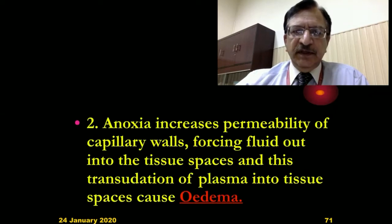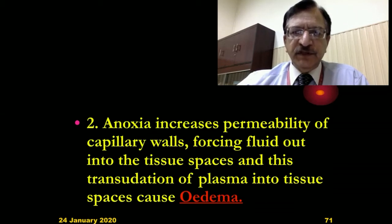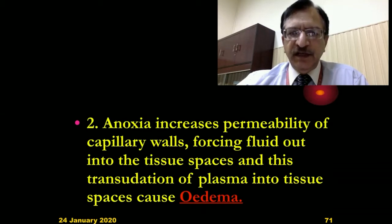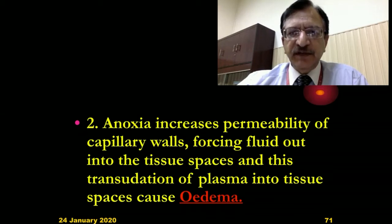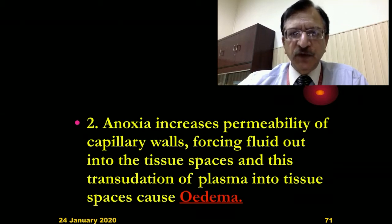Anoxia increases permeability of the capillary walls, which forces fluid to come out of the cells into the tissue spaces. This transudation of plasma into the tissue spaces causes edema of the tissues. Tissues become edematous and swollen because of increased extracellular volume of fluids.